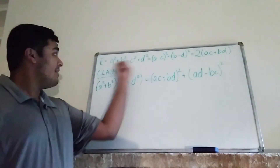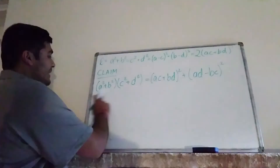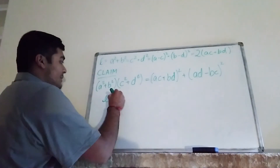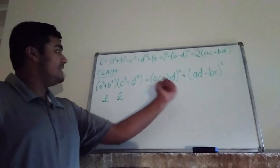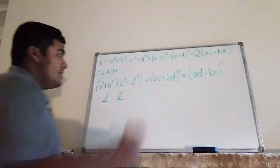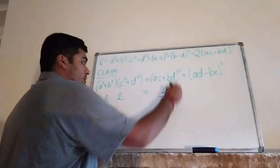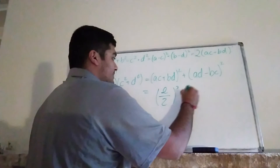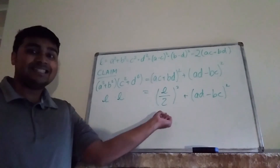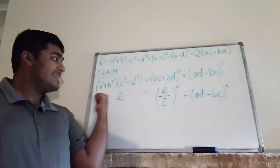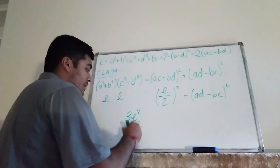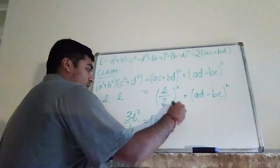Now we substitute into that identity. We have a²+b² = l and c²+d² = l, so the left side is l². On the right, ac+bd = l/2, so (ac+bd)² = l²/4. Therefore l² = l²/4 + (ad−bc)², which gives 3l²/4 = (ad−bc)².